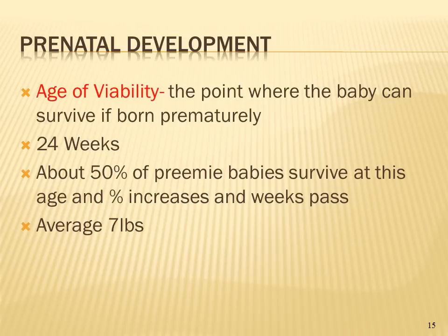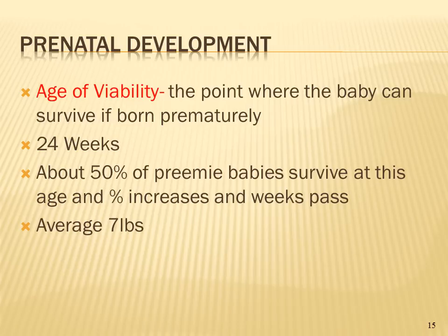The age of viability is the point at which a baby can survive if born prematurely. After 24 weeks, technology can keep a baby alive outside the womb, though about 50% of those premature babies survive at that threshold. Before 24 weeks, the womb is critical for lung and heart development. The average baby is born at 40 weeks weighing about seven pounds.